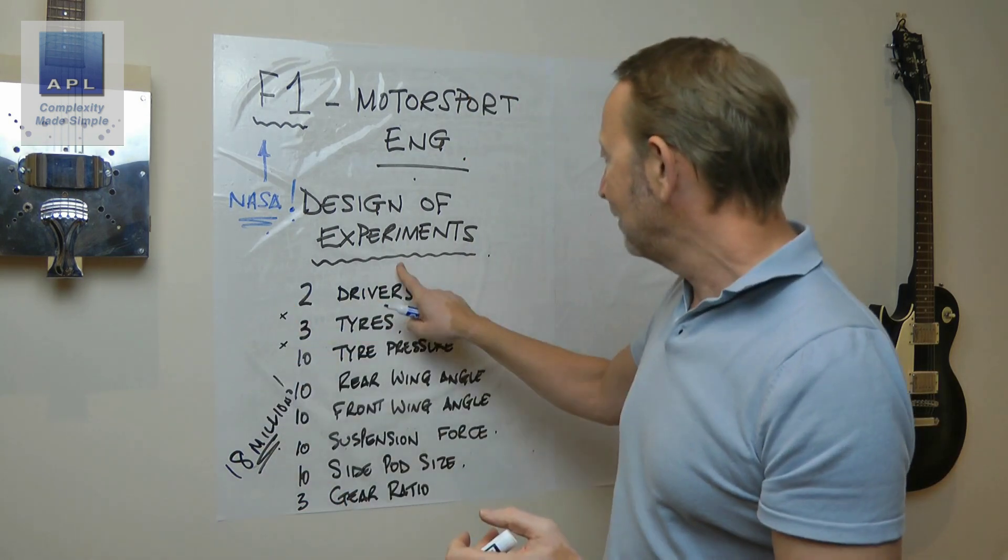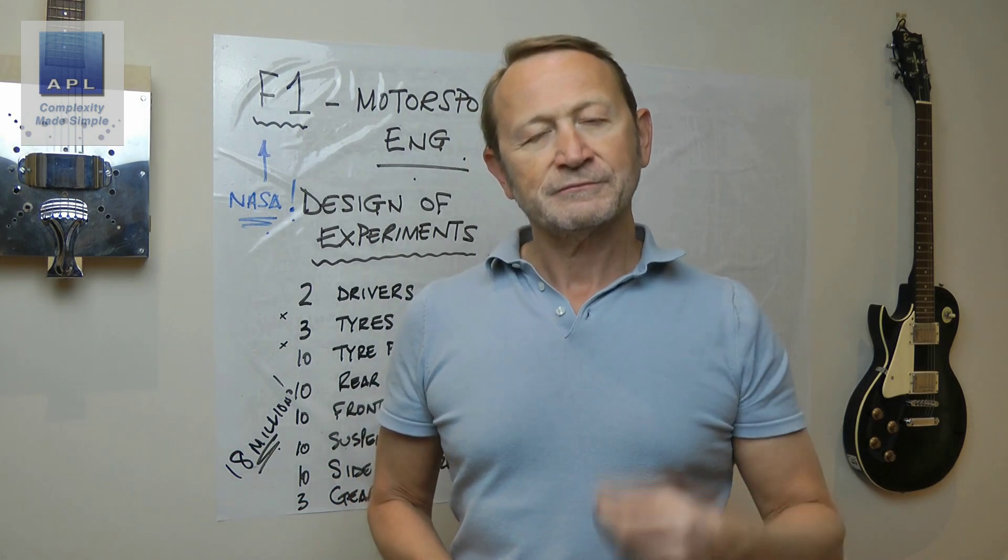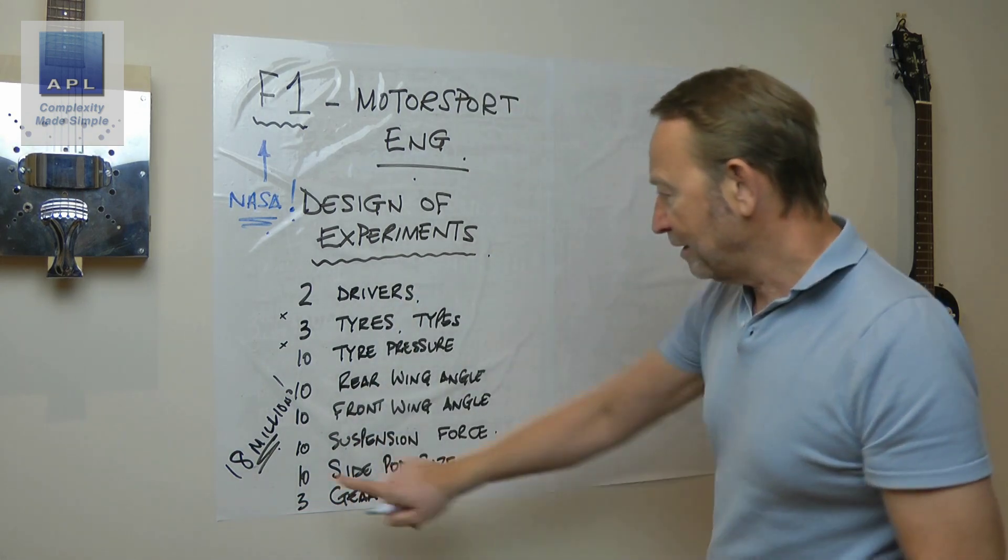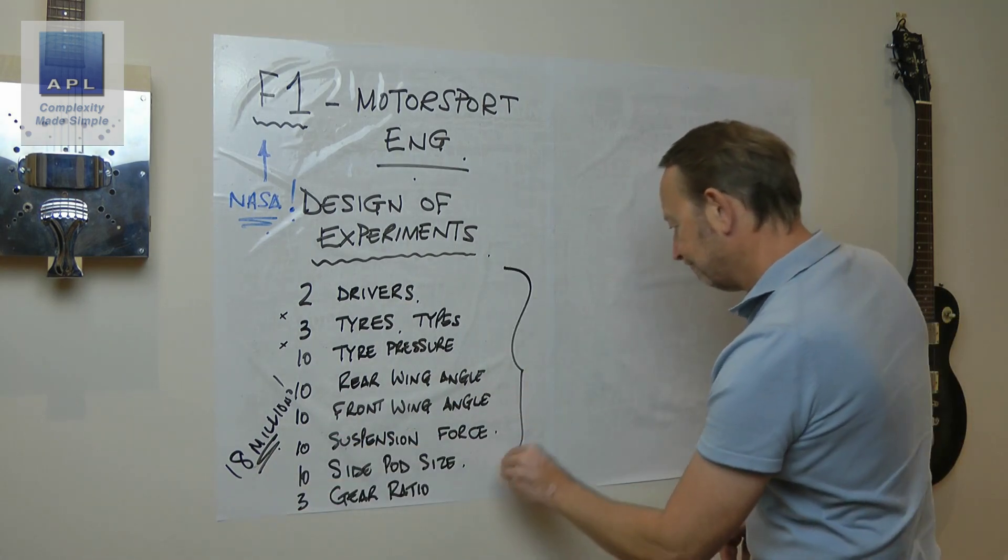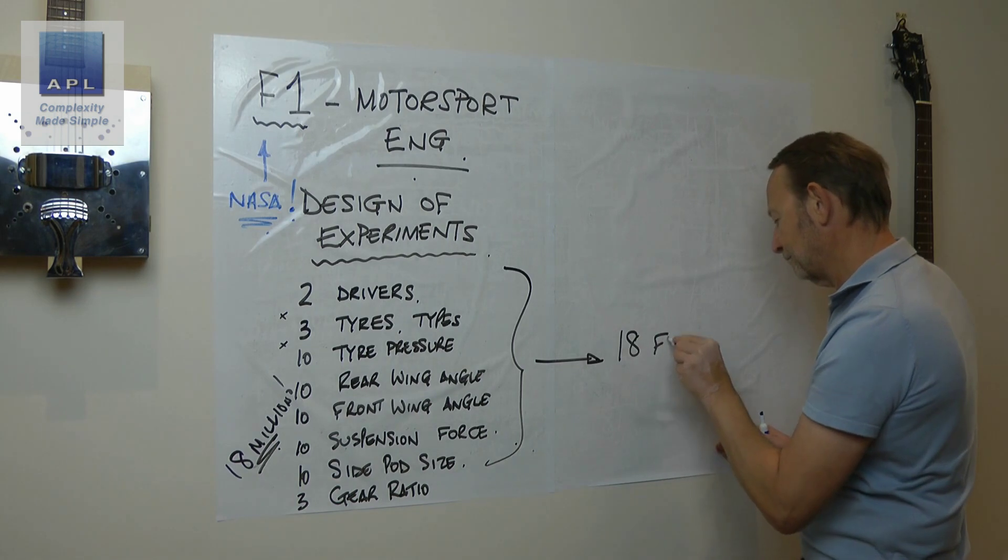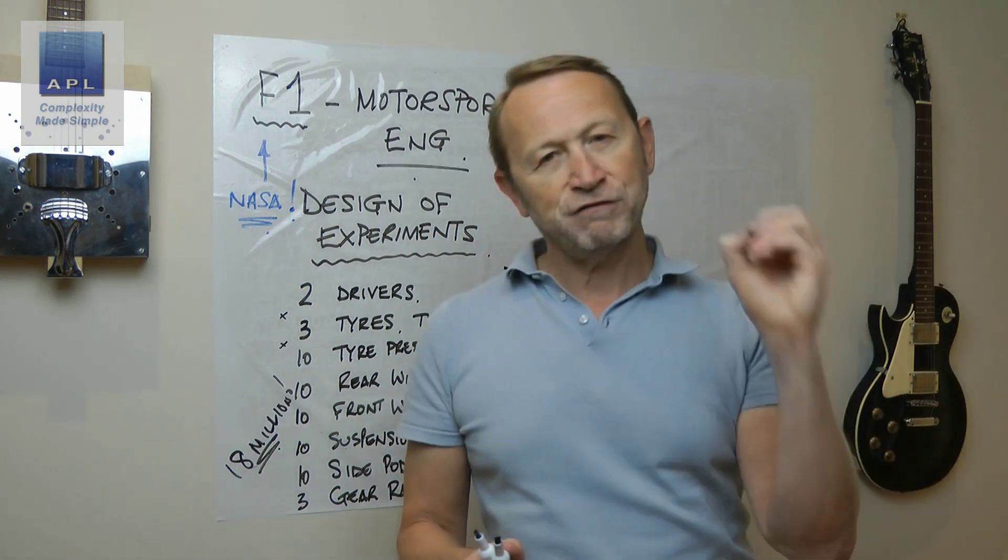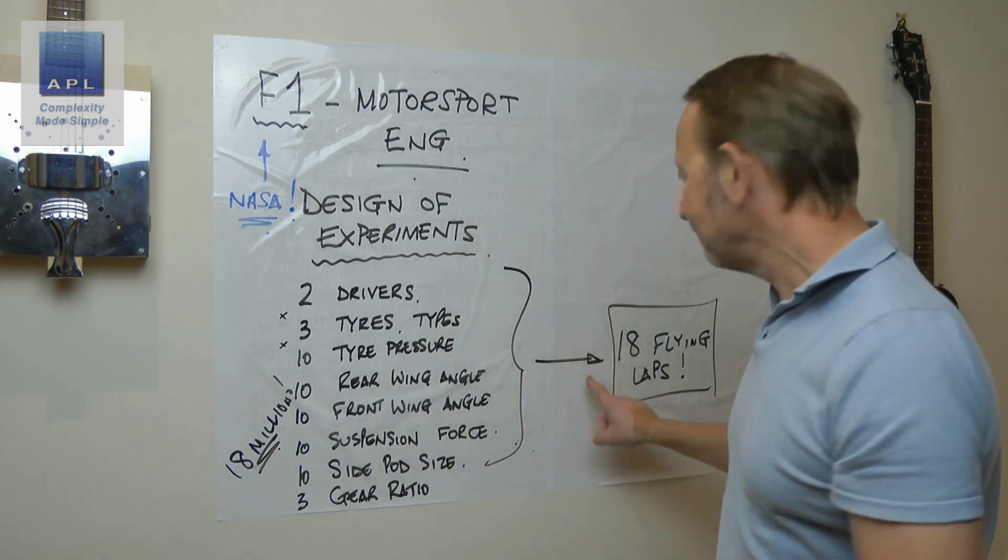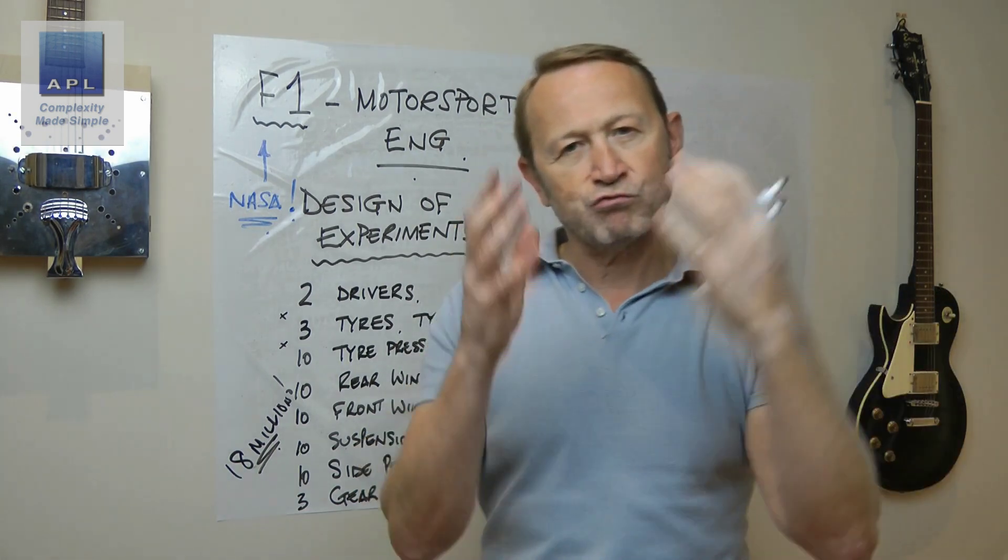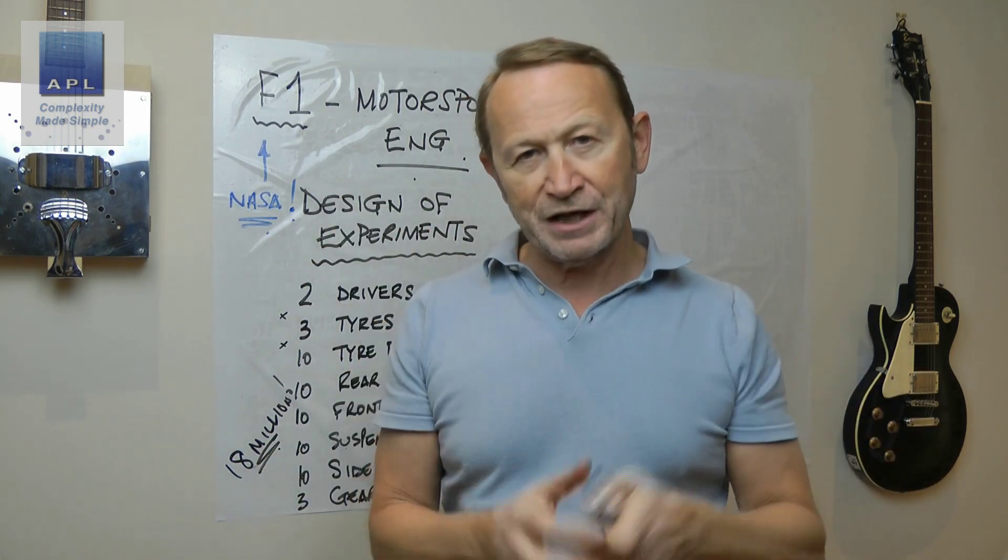What am I going to do? I'm going to do a DOE. And here's the point: in eighteen million combinations, all I need to figure this out is eighteen flying laps. By the way, it's the right tests, the right eighteen laps.